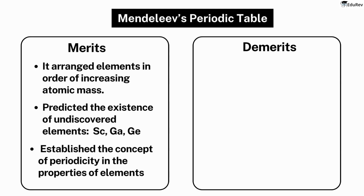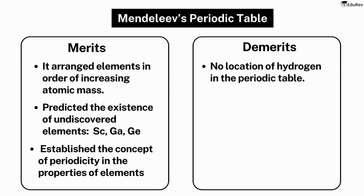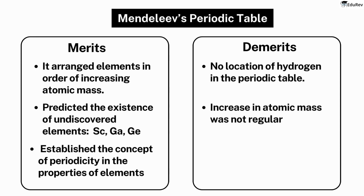Despite the significant achievements of Mendeleev's periodic table, it has some demerits. Mendeleev was unable to locate hydrogen in the periodic table. The increase in atomic mass was not regular while moving from one element to another; hence, the number of elements yet to be discovered was not predictable. Mendeleev's periodic table did not account for isotopes, and as a result, isotopes were placed in the same position as their parent elements, which led to confusion.